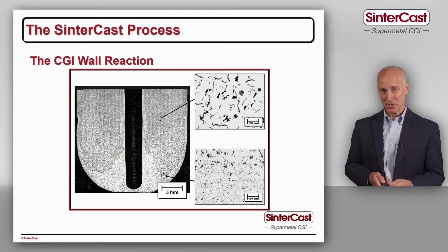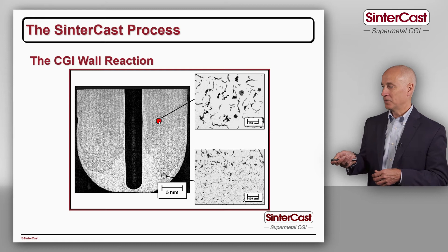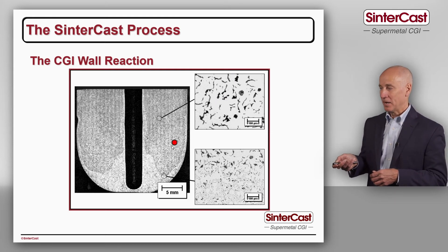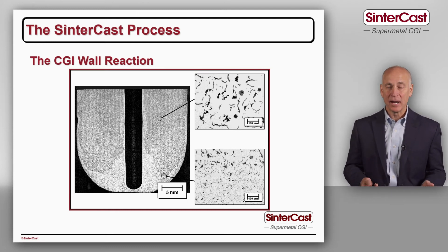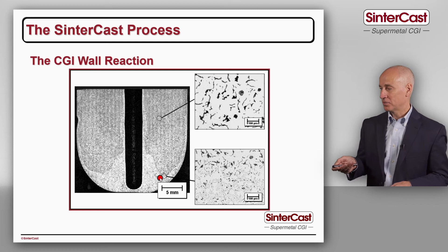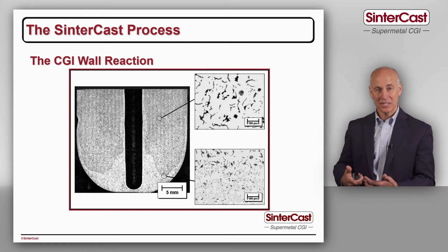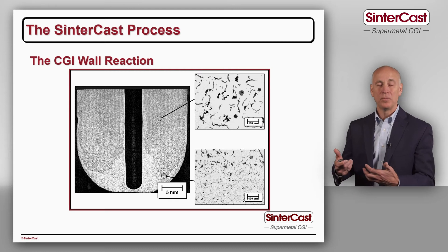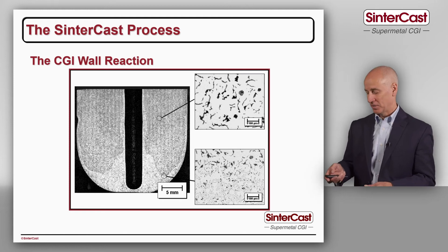Here you can see a cut section of our sampling cup after an analysis, showing the effect of the wall reaction. In the bulk iron, we have a good CGI structure. But down in the bottom, where the iron has been stagnant and reacting with the surface, we have flake graphite — type D graphite because of the fast cooling near the wall — but still flake. When we can see this formation of flake in our cooling curves, we know how much magnesium we have to add to stay safely inside of the CGI window before the end of casting.